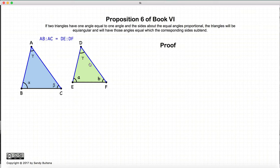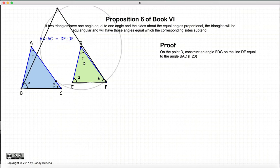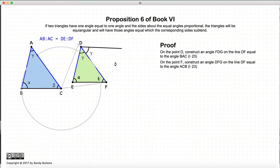So let's begin our proof. Now the first thing we're going to do is we're going to copy an angle BAC. So we're going to copy this angle here to the point D. And likewise, we are going to copy the angle ACB. So ACB is copied to point F.